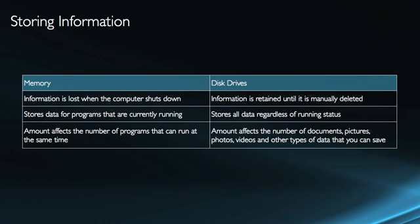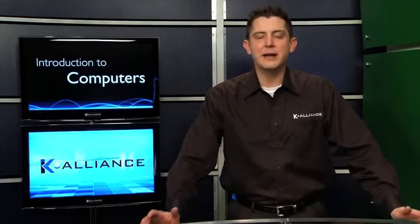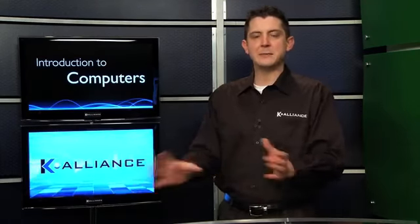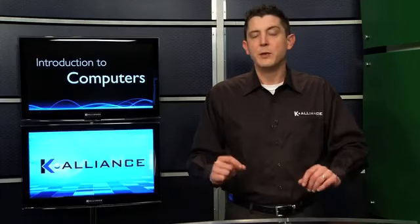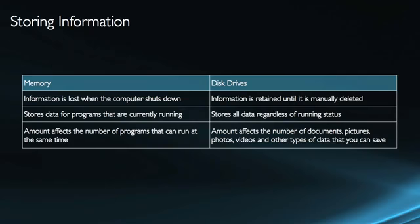With memory, the information is not permanent — it's lost when the computer shuts down. The purpose of memory is not to permanently save anything; the purpose of memory is the running program. So when you do a reboot or restart, you lose all of that information. If you had a program that was up and running and you hadn't saved the document — say I'm working on a Word document and I haven't saved it — then that information is going to be gone if I restart my computer without saving it. If I save it to the disk drive, then it's retained until I manually go in and delete it.